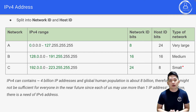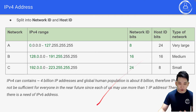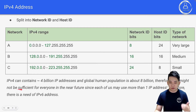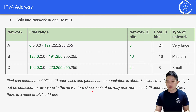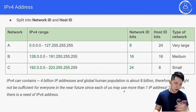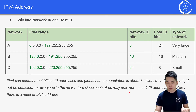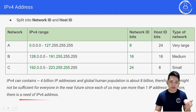IPv4 can contain about 4 billion IP addresses, but the global human population is about 8 billion. In the near future, IPv4 might not be sufficient since each person may use more than one IP address — for a laptop, tablet, phone, and so on. Therefore, there is a need for IPv6 addresses to address this issue.